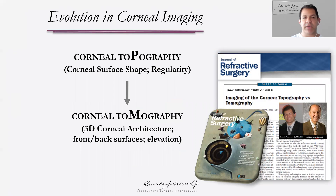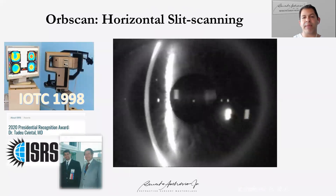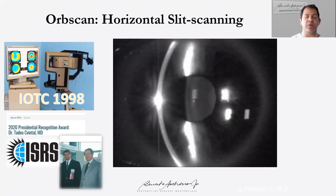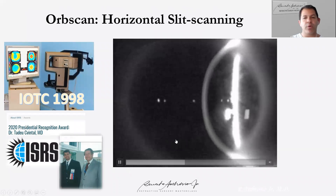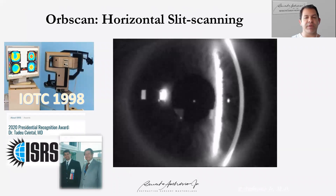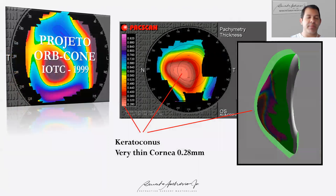The evolution of corneal imaging has been acknowledged and accepted by the community with topography and tomography. Tomography gives you a three-dimensional reconstruction of the cornea. We started doing that with the Orbscan when I was a resident with Dr. Cadeo Severino in São Paulo. The Orbscan gives you a horizontal translation of the Scheimpflug images, and we started a project called Orbicon — a cartoon of slides educating us to understand elevation and thickness maps, including the thickness profile concept.